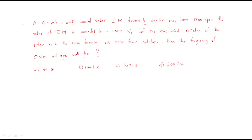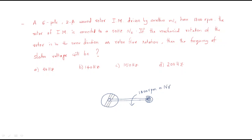Hello everyone. In this session we look at some different problems regarding the induction motor. The problem is a six-pole three-phase wound rotor induction motor driven by another machine having 1800 rpm. This rotor is driven by another machine at 1800 rpm, meaning the rotor rotates with 1800 rpm.